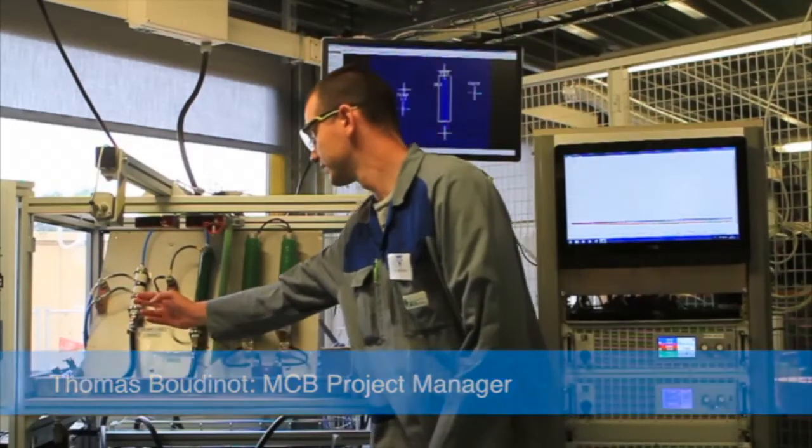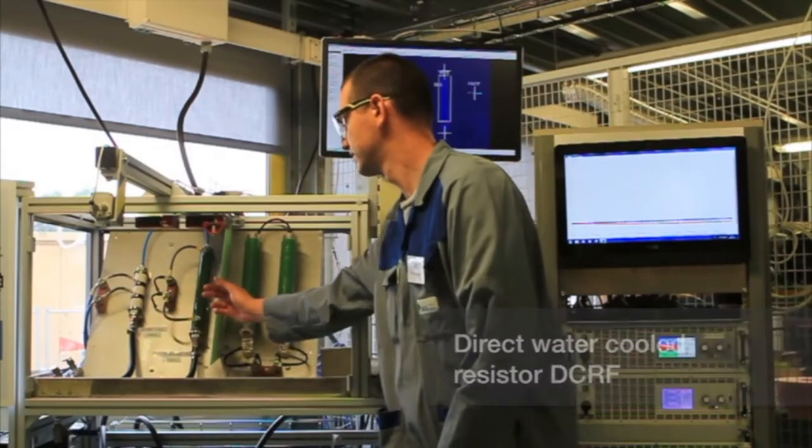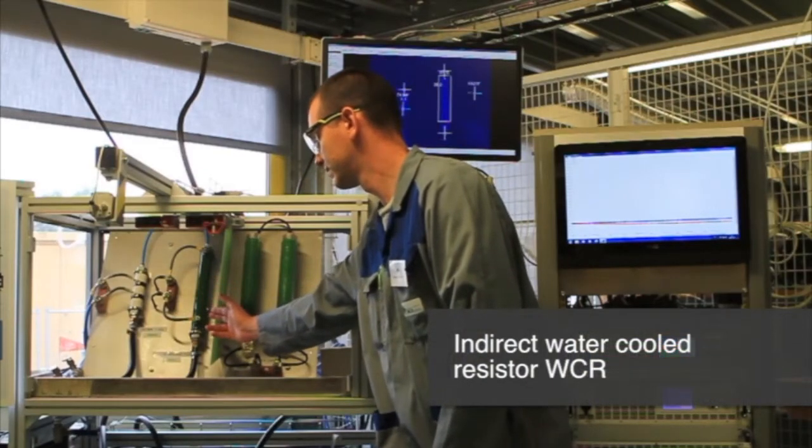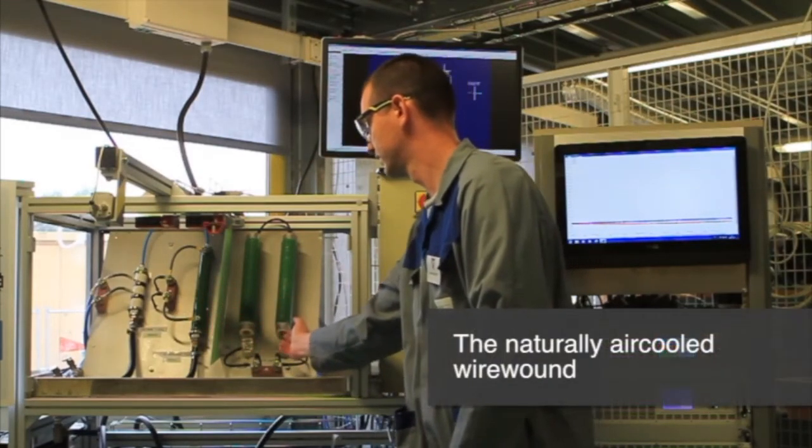This is the direct water cooled resistor DCRF and here is the indirect water cooled resistor WCR. And finally the naturally air cooled wire wound resistor.